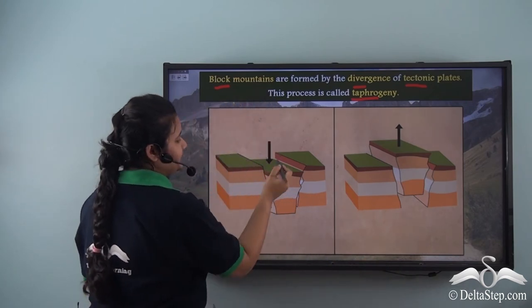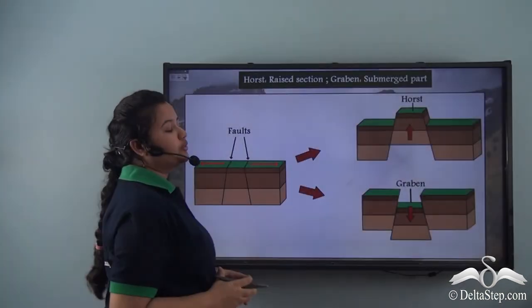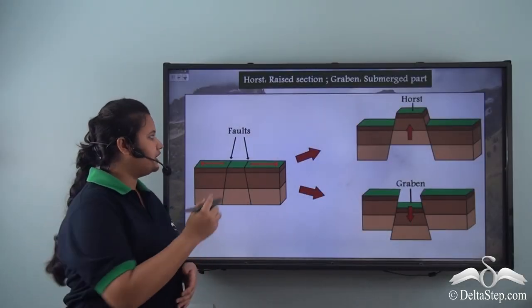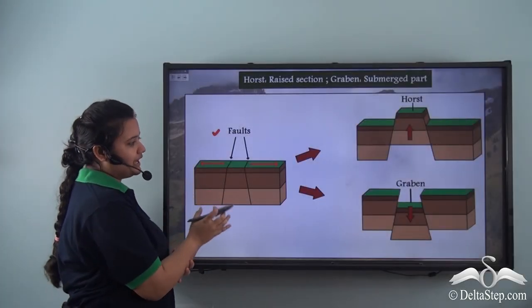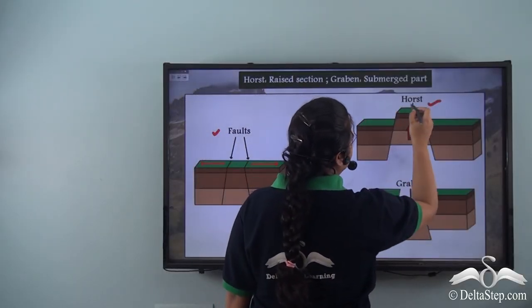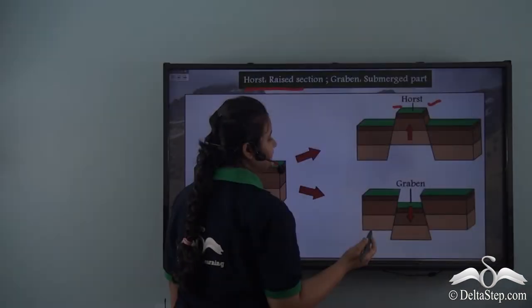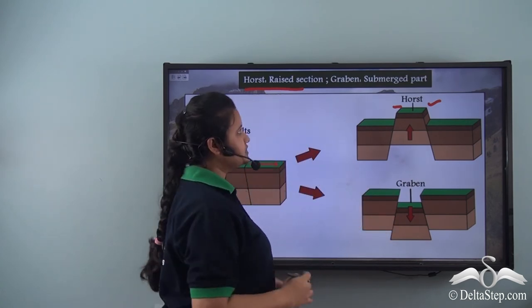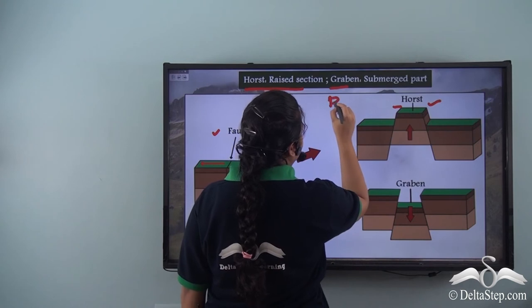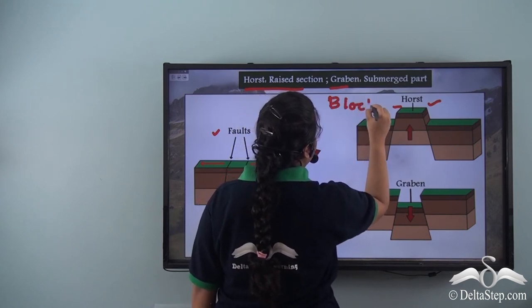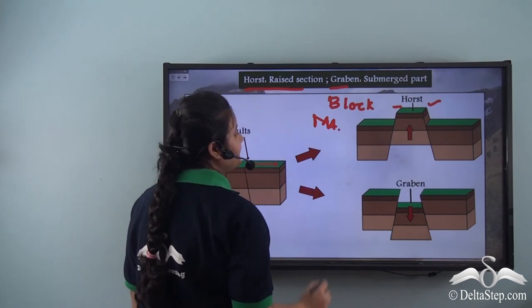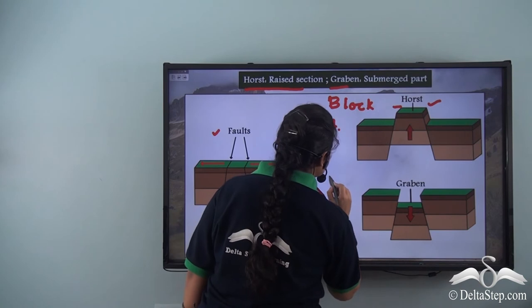The land in between may either submerge or get uplifted. Due to divergence, we have cracks or faults along the earth's surface, and the land between these fault lines either submerges or gets uplifted. The raised section of the land is called the horst, while the depressed or submerged part is called the graben. The horst, or uplifted section, generally forms the block mountain, while the graben, or submerged part, forms the rift valley.